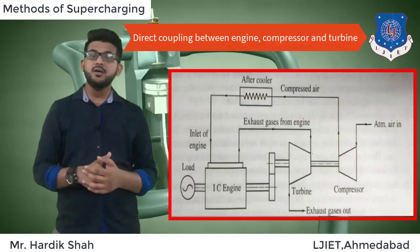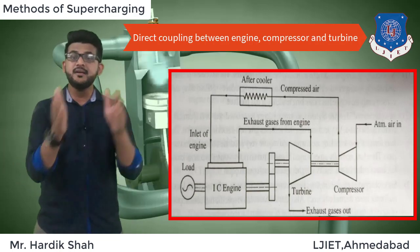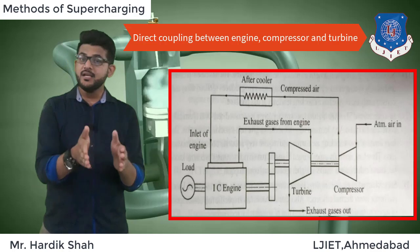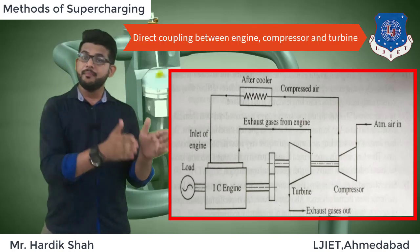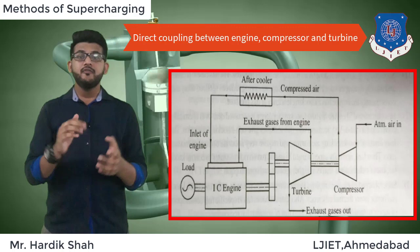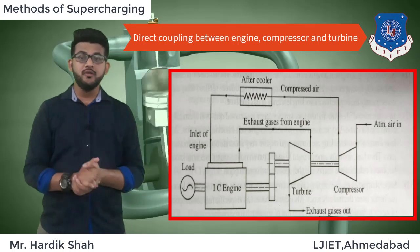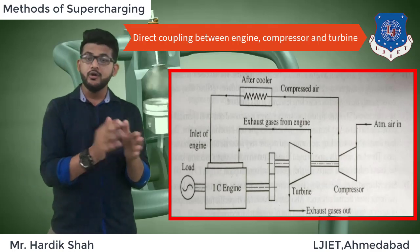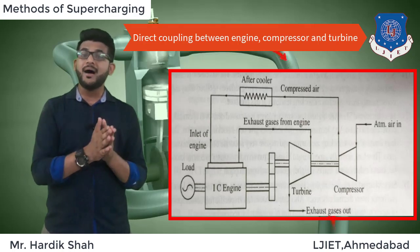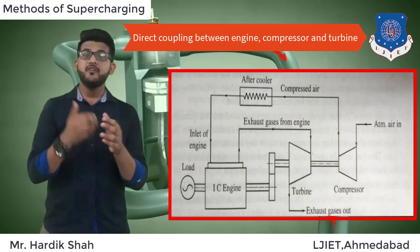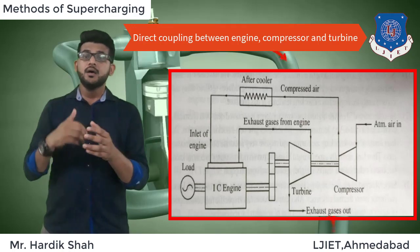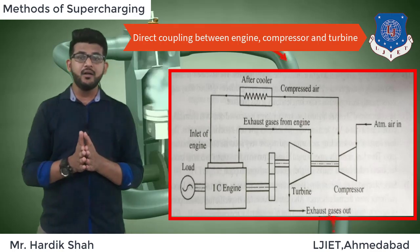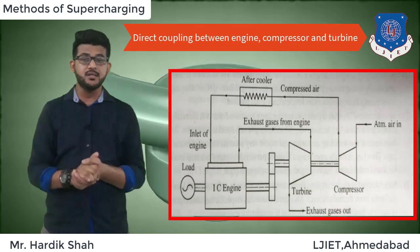The fifth method is direct coupling between the engine, turbine, and compressor. In this arrangement, the compressor, engine, and turbine are all coupled together with the help of gearing, as shown in the figure. If the turbine output is not enough to run the compressor during part load, the engine power takes care of the remaining compressor load. In addition, extra power from the turbine can be fed back to the engine.